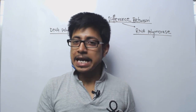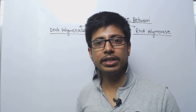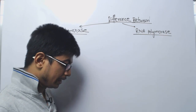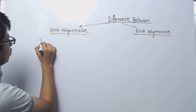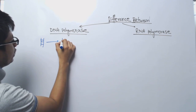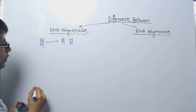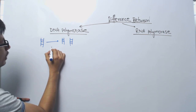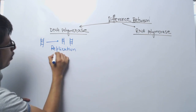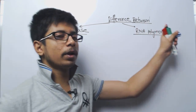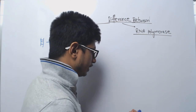DNA polymerase is the prime enzyme required for the DNA replication process — that means it is required to produce a daughter DNA from the parent DNA. This enzyme is required for the replication process. On the other hand, RNA polymerase is the vital enzyme for the process of transcription.